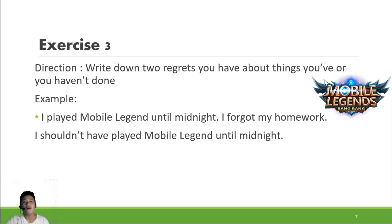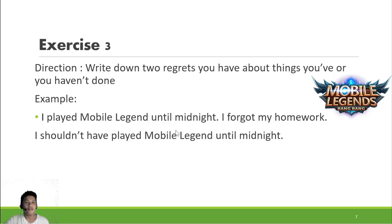Exercise Three: write down two regrets about things you have or haven't done. For example: 'I played Mobile Legend until midnight — I forgot my homework.' Playing Mobile Legend until midnight wasn't a good idea. Because of playing, I forgot my homework and I regret that. So I say: I shouldn't have played Mobile Legend until midnight.